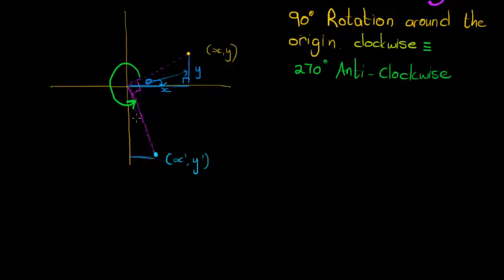Now if I connect the rotated triangle, do we have a congruent triangle? Can we see that this angle is also theta? If it is theta, and since this length equals that length, and we have a 90 degree angle in each, then we'd have two congruent triangles. To verify: if this angle is theta, then this adjacent angle is 90 degrees minus theta, because together they make 90 degrees.